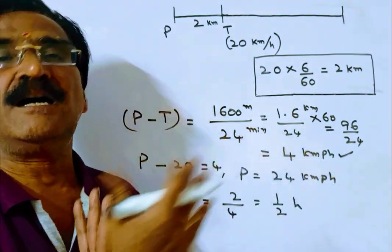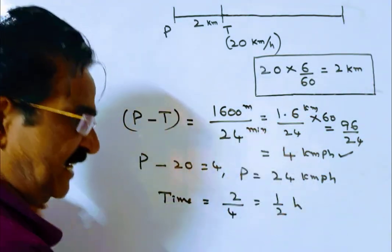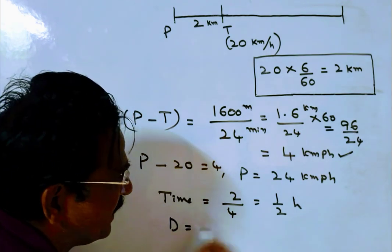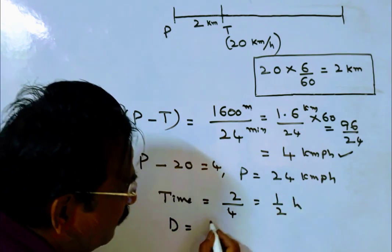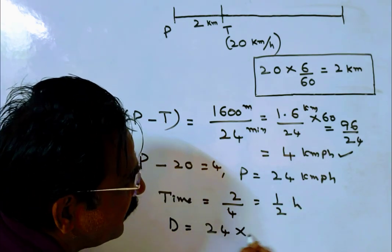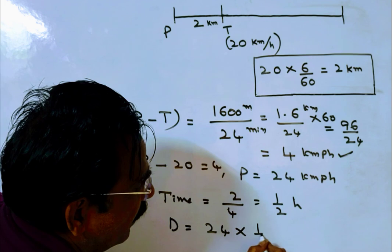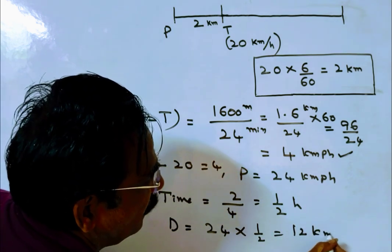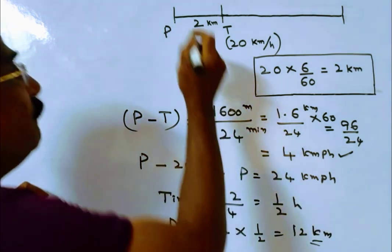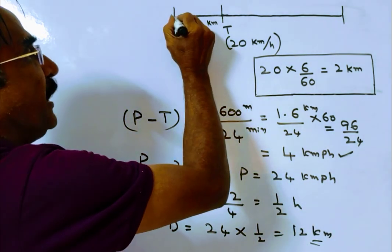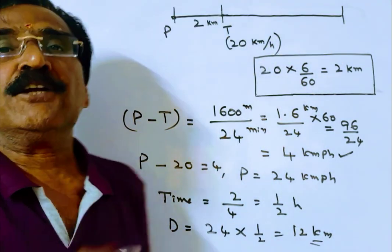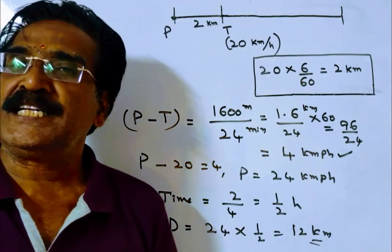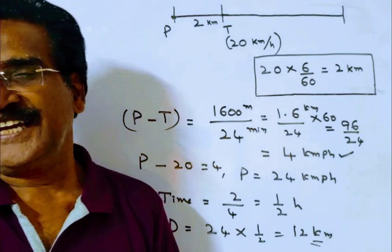In this half an hour, the police travels a distance equal to police velocity 24 multiplied by time half an hour, which is equal to 12 km. So from this point, 12 km ahead the police will catch the thief.